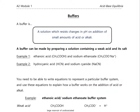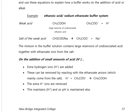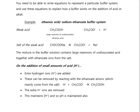Just a quick recap on buffers: their purpose is to resist changes in pH when we add in small amounts of acids or alkalis. We're going to look at a couple of examples, the first being ethanoic acid and sodium ethanoate. A buffer always consists of a weak acid such as ethanoic acid, and the salt of the weak acid — sodium ethanoate.